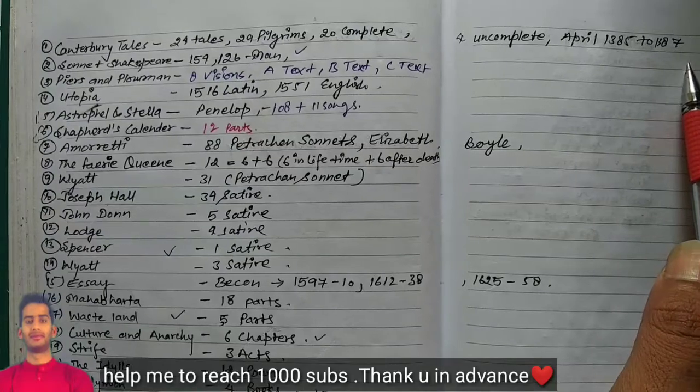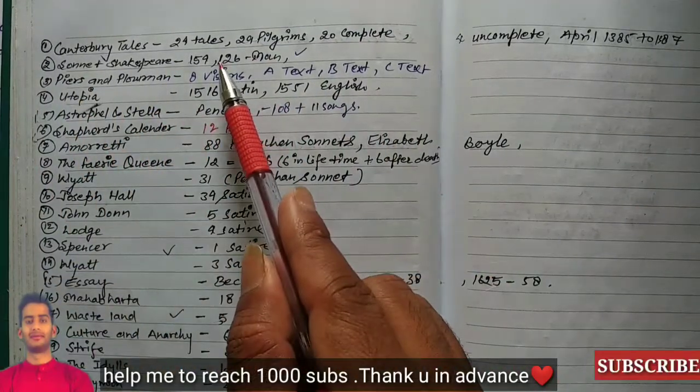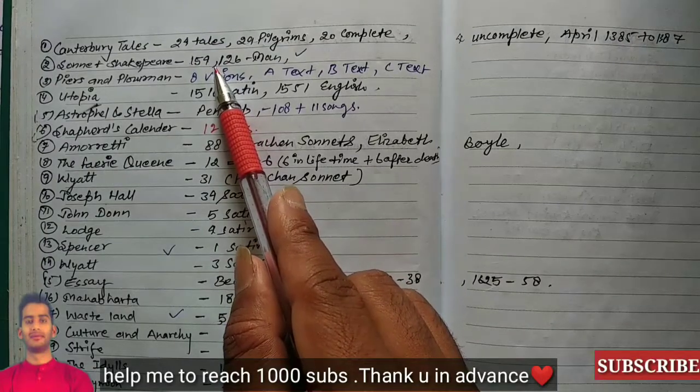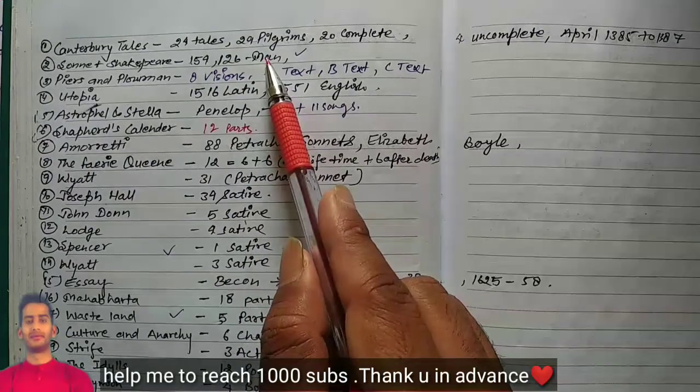Sonnets by Shakespeare: the number of sonnets are 154. 126 sonnets are written for men and others are written for dark lady.